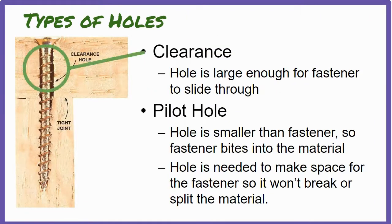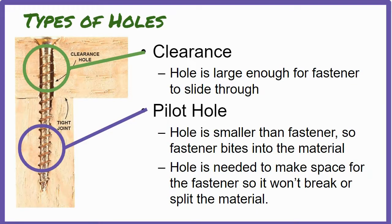A clearance hole is a hole large enough for a fastener to slide through without resistance. A pilot hole is a hole that's smaller than the fastener so that the threads on the fastener bite into the material. Pilot holes are often necessary to make space for the fastener so it won't break or split the material. When screwing two pieces of material together, it's common to use a combination of a clearance hole and a pilot hole. The clearance hole is drilled through the first piece and the pilot hole into the second.